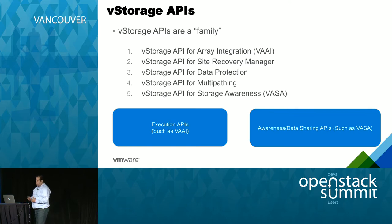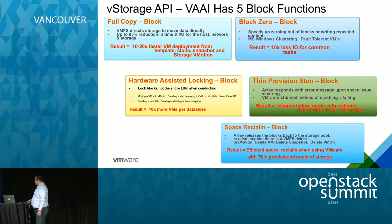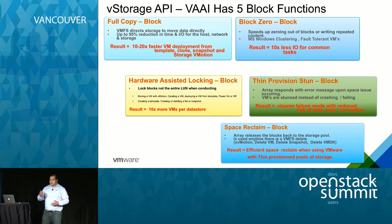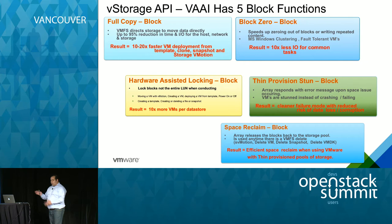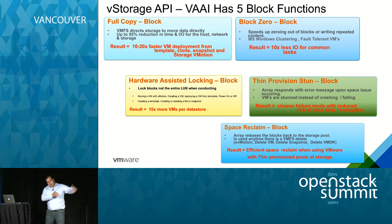To give an example: VAI full copy block. Let's say you want to copy a VM or use a template — similar to how images work in OpenStack. If the image is in the same array and needs to be copied to another section, the array does the operation in the background. Instead of the storage moving into vSphere and back to the array, it all happens in the background — providing up to 10 to 20x faster VM deployment time.